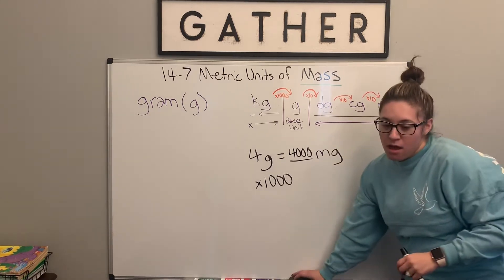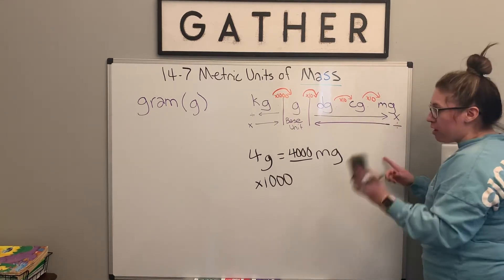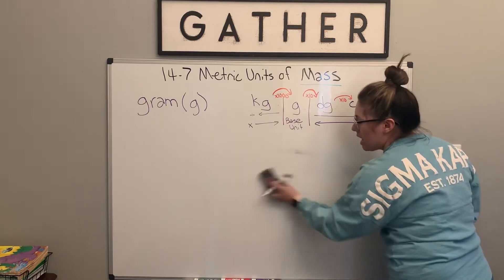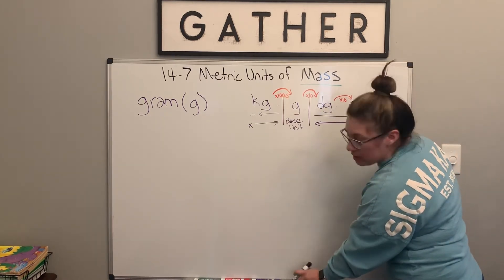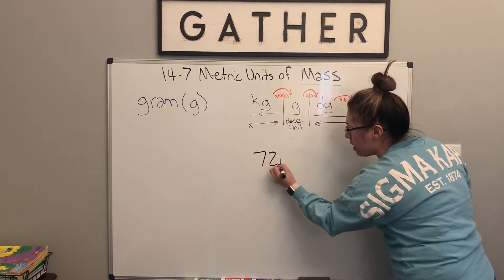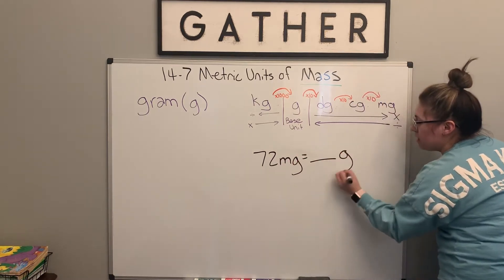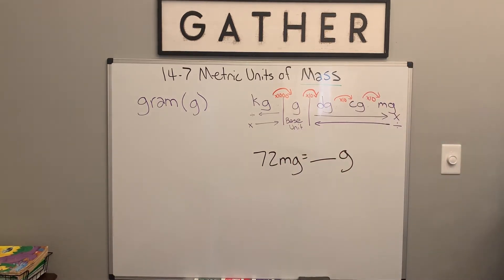All right. So next we're going to go milligrams to grams. So we're going to go the opposite way now. And we have 72 milligrams. And we want to figure out how many grams that is.